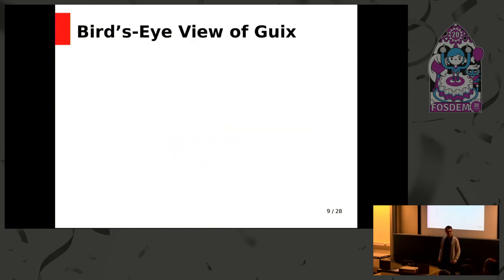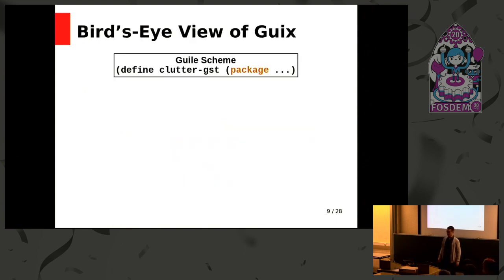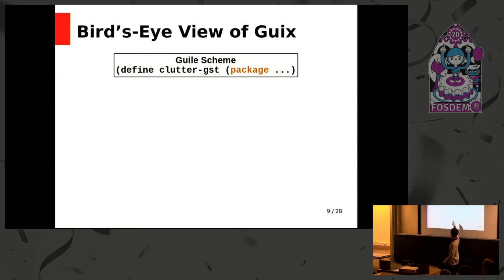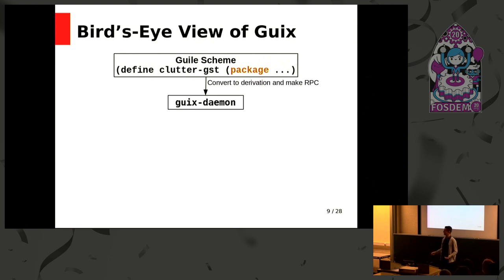At a high level, when Guix builds software, we start with Guile Scheme — the package definition. This is just a Guile Scheme object, a variable called clutter-GST, and it contains an object you can manipulate using Scheme code. That gets converted into a lower-level representation, which we call a derivation, and then we ask the daemon — the Guix daemon — to execute that derivation.